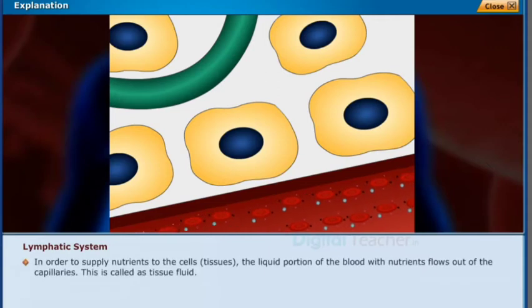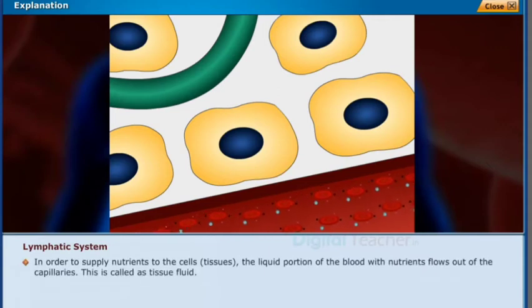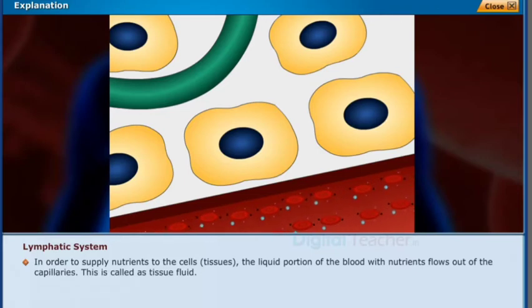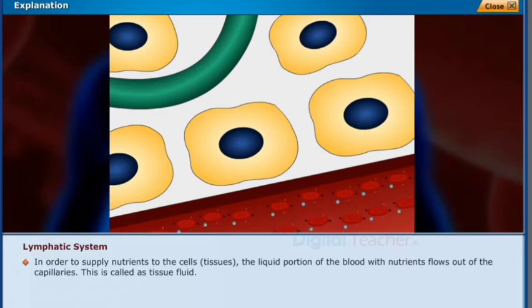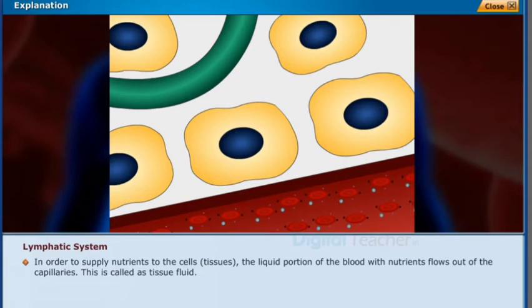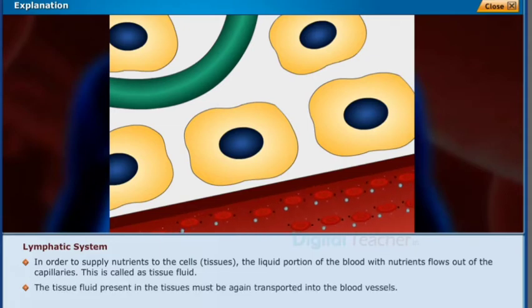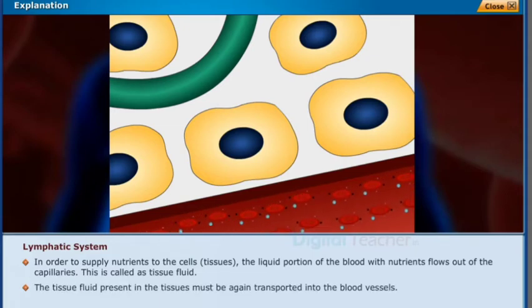In order to supply nutrients to the cells or tissues, the liquid portion of the blood with nutrients flows out of the capillaries. This is called tissue fluid. The tissue fluid present in the tissues must be again transported into the blood vessels.